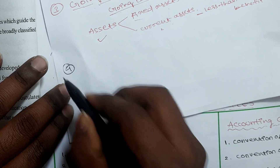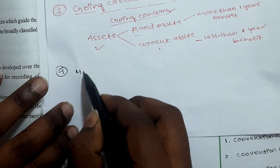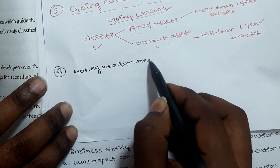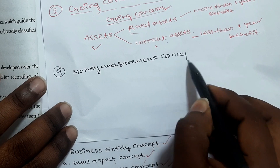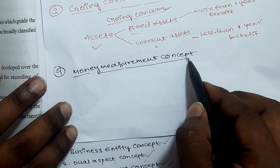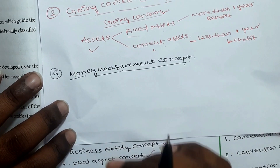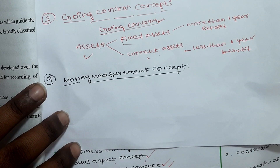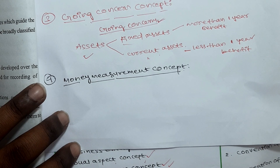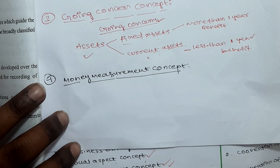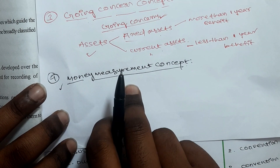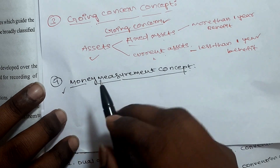The fourth concept is the Money Measurement Concept. According to accounting standards, every event or transaction that is financial in character and can be expressed in terms of money is recorded. The money measurement concept is defined around this idea of financial nature.